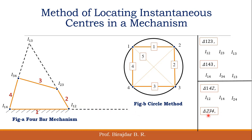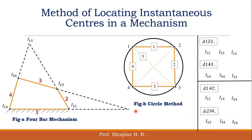From triangle 2-3-4, the instantaneous centers are 2-3, 3-4, and 2-4. Instantaneous centers 2-3 and 2-4 are on one straight line, so the third, 3-4, should lie on that same line too. We extend this line. Since side 2-4 is common to both triangles, the two lines meet at one common point — that is instantaneous center 2-4. In this way, we have located the sixth and final instantaneous center.